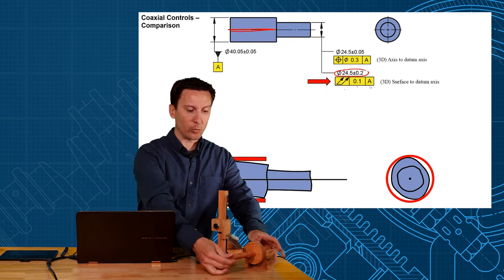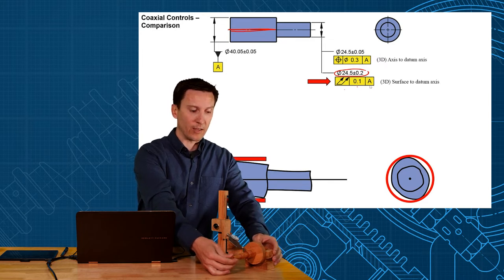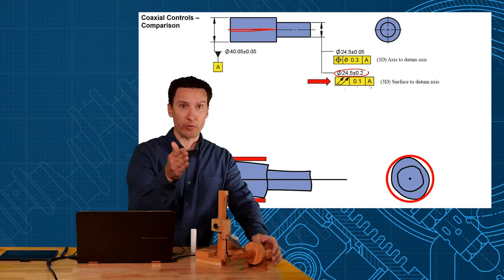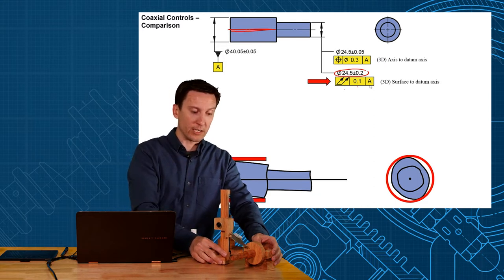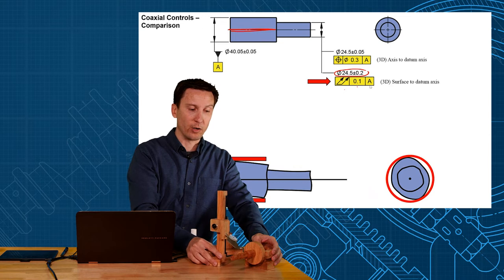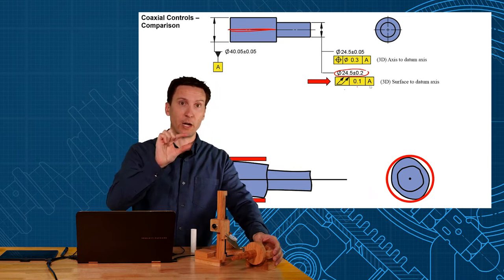Now as we rotate the part, we watch that TIR, total indicator reading, and that total indicator reading can't be any more than 0.1. Now with total run-out, you're also going to want to check each cross section along here to make sure all of the surface falls within the 0.1 TIR.